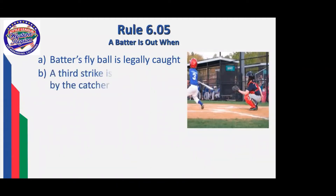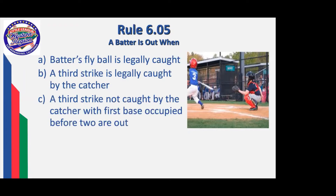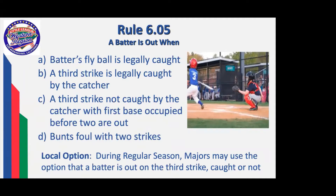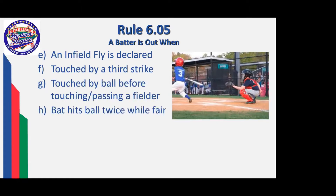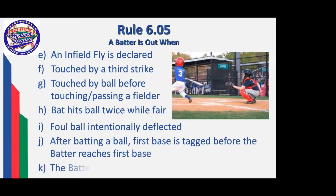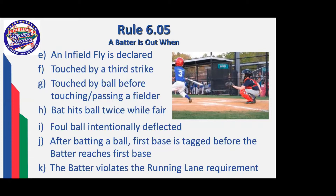Pretty much everybody thinks they understand exactly when a batter is going to be out: fly ball legally caught, third strike legally caught, third strike not caught with first base occupied before two are out, if the batter bunts foul with two strikes. Remember, it's a local option that the majors may use — that a batter is out on the third strike whether caught or not during the regular season. The batter is also out when an infield fly is declared, when the batter is touched by a third strike, touched by a ball before touching or passing a fielder as a batter-runner, if the bat hits the ball twice while fair — remember, it's the bat hitting the ball, not the ball hitting the bat — any foul ball which is intentionally deflected as a batter-runner proceeds to first, after batting a ball if first base is tagged before the batter-runner reaches first base, or the batter-runner commits a running lane violation.